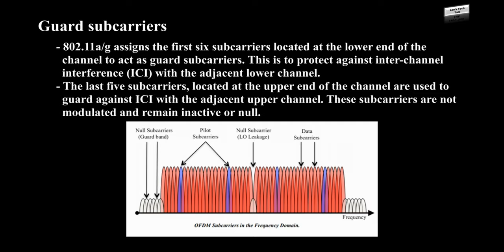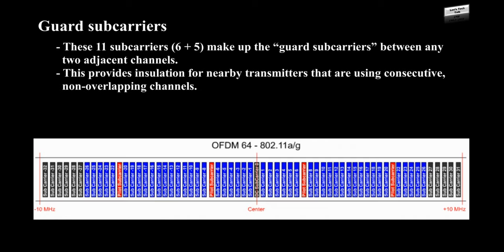Guard subcarriers: 802.11a or 802.11g assigns the first 6 subcarriers, located at the lower end of the channel, to act as guard subcarriers. This is to protect against inter-channel interference, ICI, with the adjacent lower channel. The last 5 subcarriers, located at the upper end of the channel, are used to guard against ICI with the adjacent upper channel. These subcarriers are not modulated and remain inactive or null. These 11 subcarriers (6 plus 5) make up the guard subcarriers between any two adjacent channels, providing insulation for nearby transmitters using consecutive non-overlapping channels.